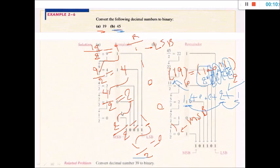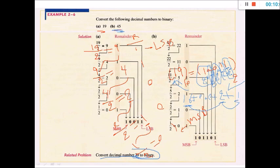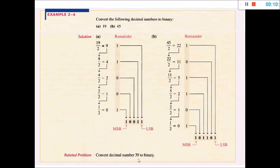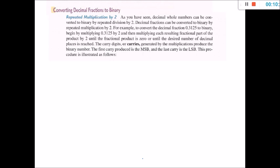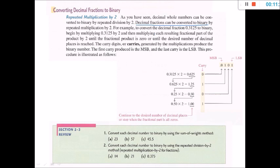You also have a related problem: convert decimal number 39 to binary. Now, if we have a fractional part in a decimal number, how can we convert a decimal number with a fractional part to binary? A decimal fraction can be converted to binary by repeated multiplication by 2. For example, to convert this number to binary, we repeatedly multiply by 2 until the fractional part reaches 0.